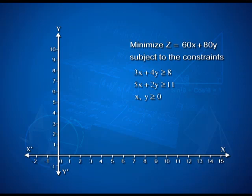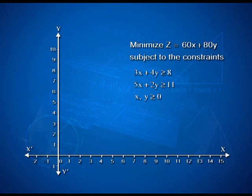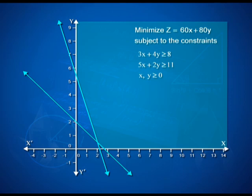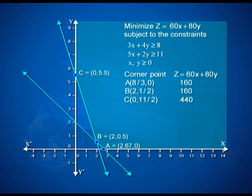You might wonder there is nothing special about this problem so far, so let us wait and watch what happens. As we plot the graph with the two linear constraints 3x + 4y ≥ 8 and 5x + 2y ≥ 11, taking the origin as a testing point, in both cases the origin does not satisfy the inequalities. Therefore the shading will be away from the origin. Restricting to the first quadrant, we get an unbounded feasible region with three corner points A, B, and C, which can be read from the graph or solved simultaneously.